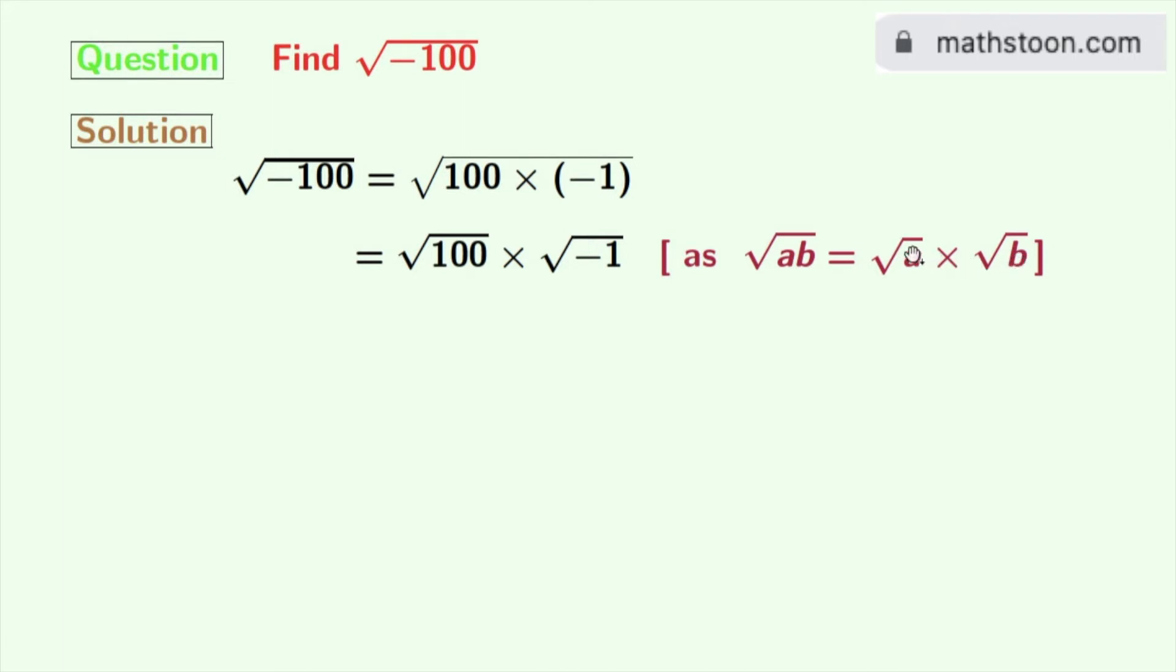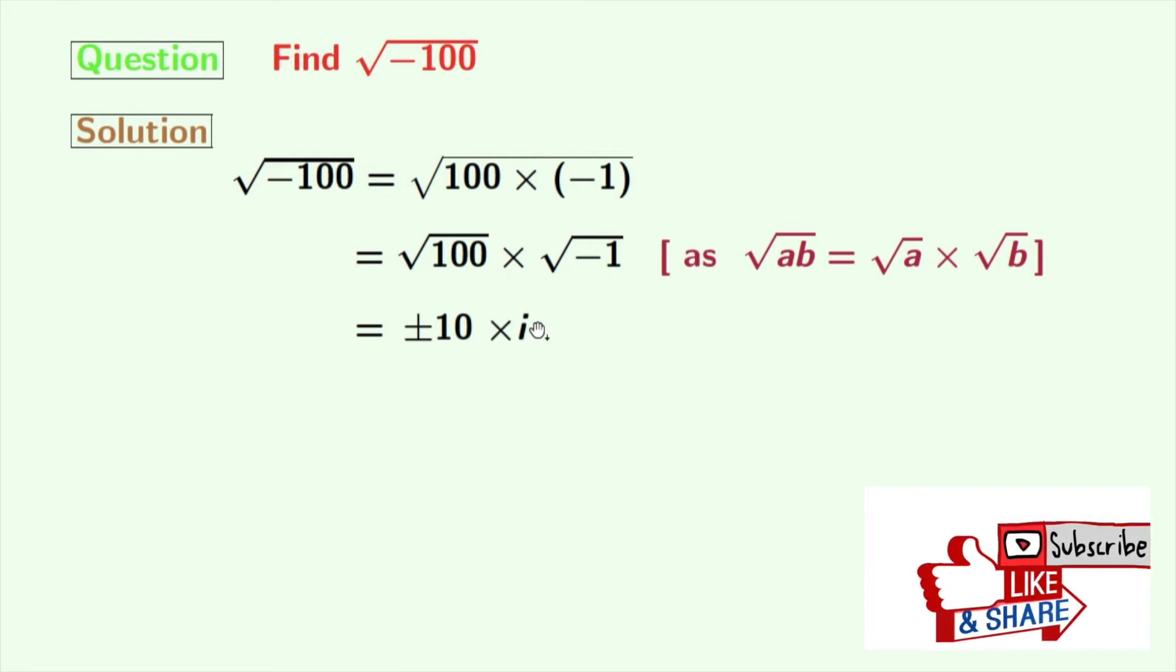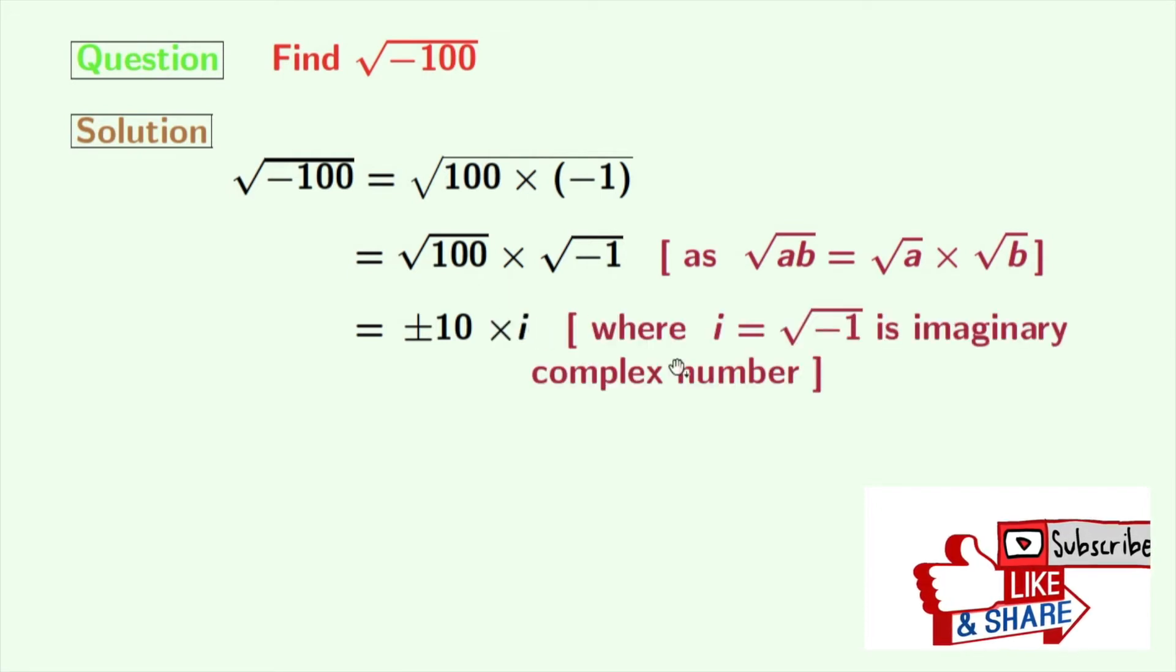Now look that root over 100 is plus minus 10, and root over minus 1 is i, where i is an imaginary complex number and its value is root over minus 1.